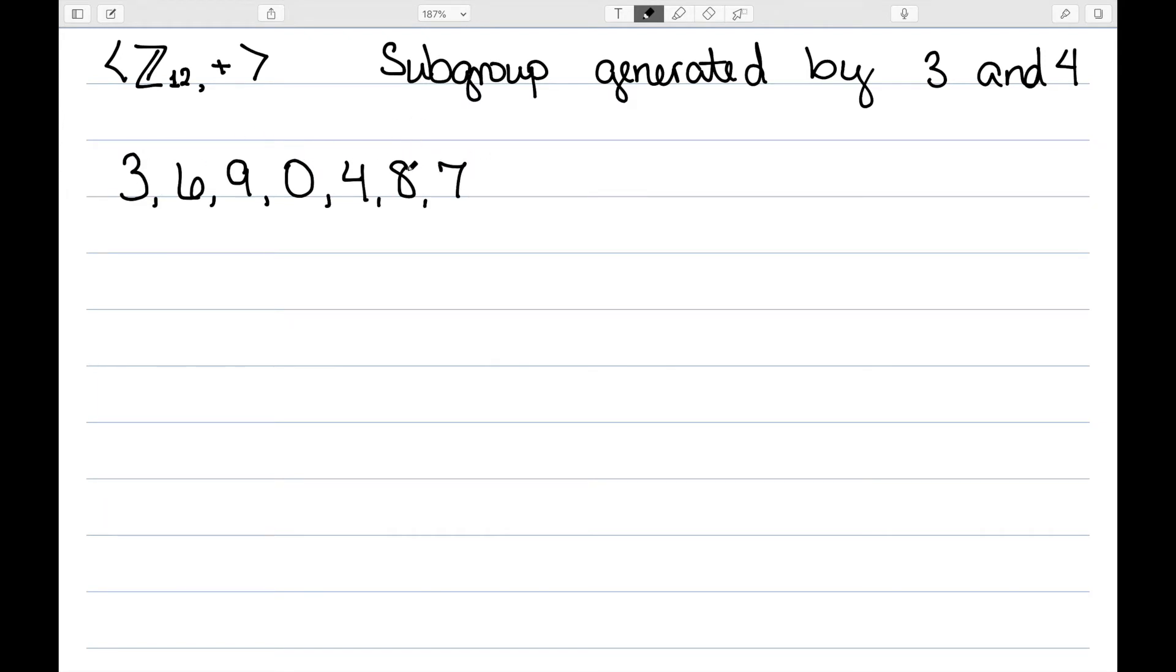3 plus 8 is 11. 3 plus 7 is 10. 3 plus 11 would be 14, divided by 12 has a remainder of 2. 3 plus 10 is 13, divided by 12 has a remainder of 1. 3 plus 2 is 5.